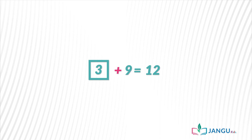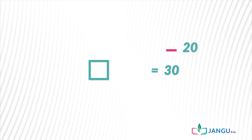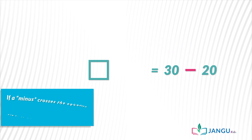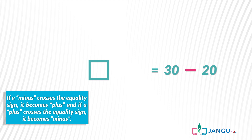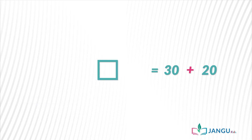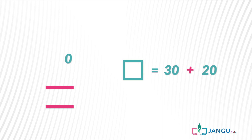A second example: an unknown number minus 20 equals 30. By collecting like terms, we move minus 20 across the equality sign to meet 30. Remember that if a minus crosses the equality sign it becomes plus, and if a plus crosses the equality sign it becomes minus. So our blank square box equals 30 + 20. 0 plus 0 is 0, 3 plus 2 is 5. Therefore the unknown number is 50.